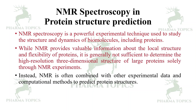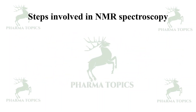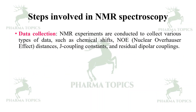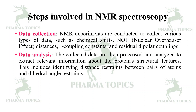Instead, NMR is combined with other experimental data and computational methods to predict the structures of larger proteins. The steps involved in NMR spectroscopy begin with data collection: NMR experiments are conducted to collect various types of data such as chemical shifts, Nuclear Overhauser Effects, distances, J coupling constants, and residual dipolar couplings.